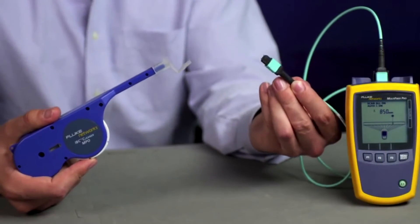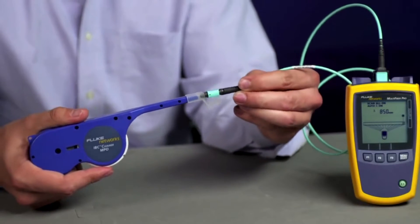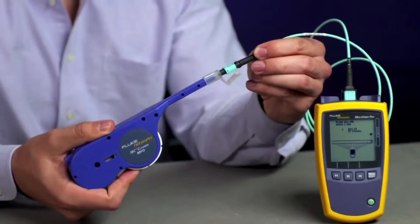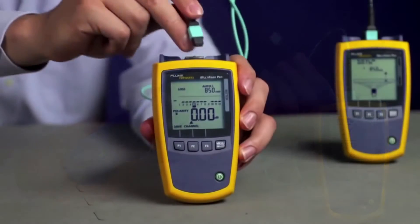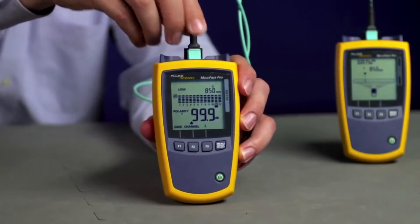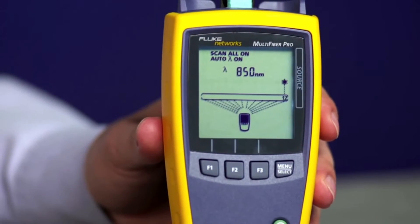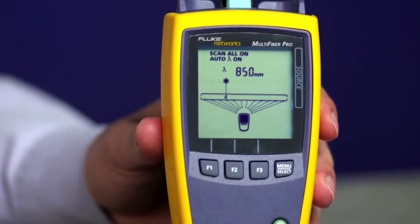Begin a test by setting the reference. As usual, clean the end-phase connectors with our one-click MPO cleaners. Then simply connect one of the given test cords to the power meter and the light source. Make sure the light source is on Scan All mode with Auto Wavelength on.